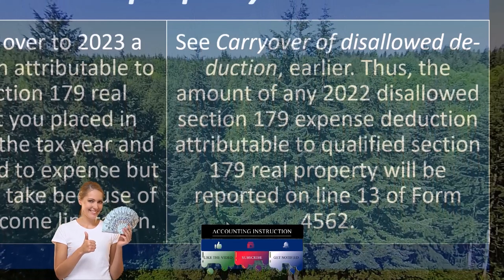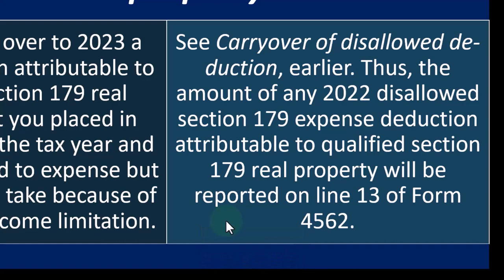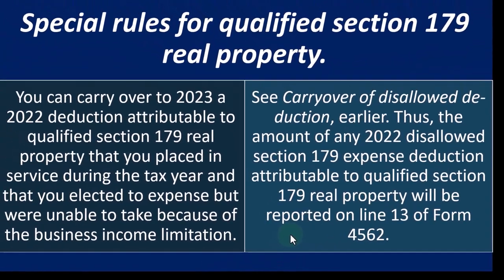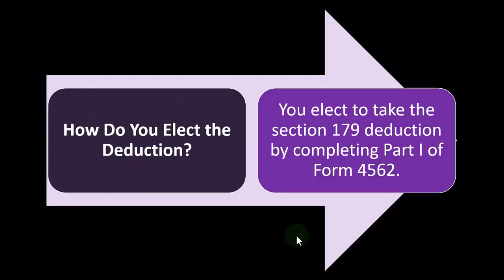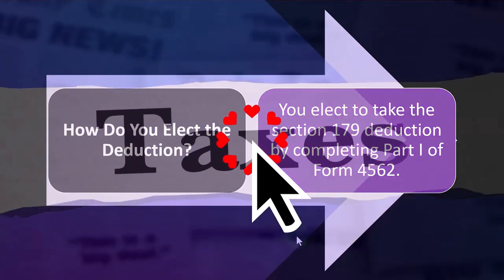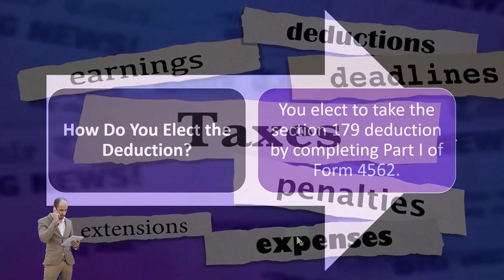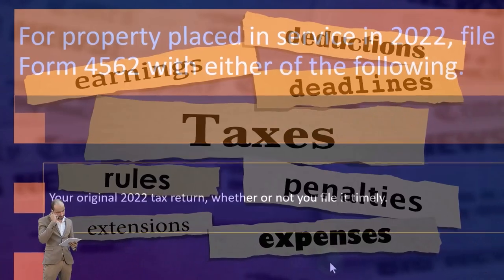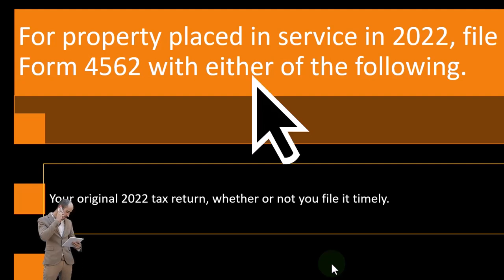Thus, the amount of any 2022 disallowed Section 179 expense deduction attributable to qualified Section 179 real property will be reported on line 13 of Form 4562. To elect the deduction, you complete Part 1 of Form 4562. Software is helpful to guide you through the process, and we may look at some software examples in future presentations.